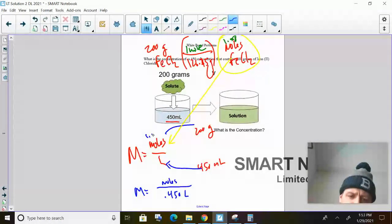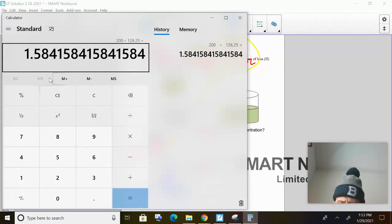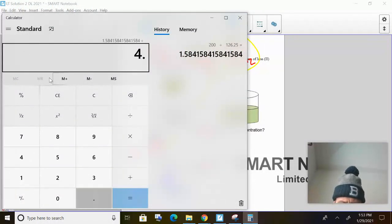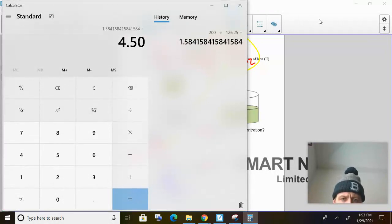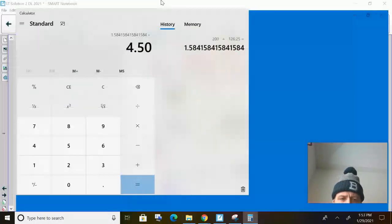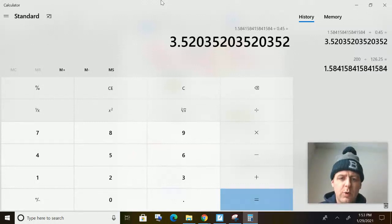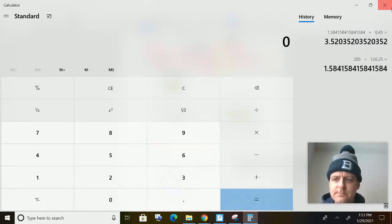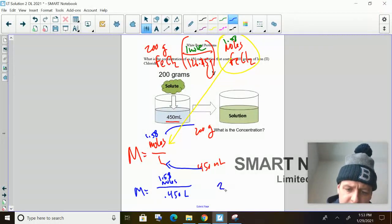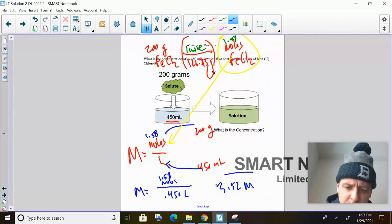So it's going to be 1.58 moles then. So 1.58 divided by 0.450. So divided by 0.450. Where is it? 0.45. You can screw that one up. 0.45. 3.52 molar. So it's a 3.52 molar solution.